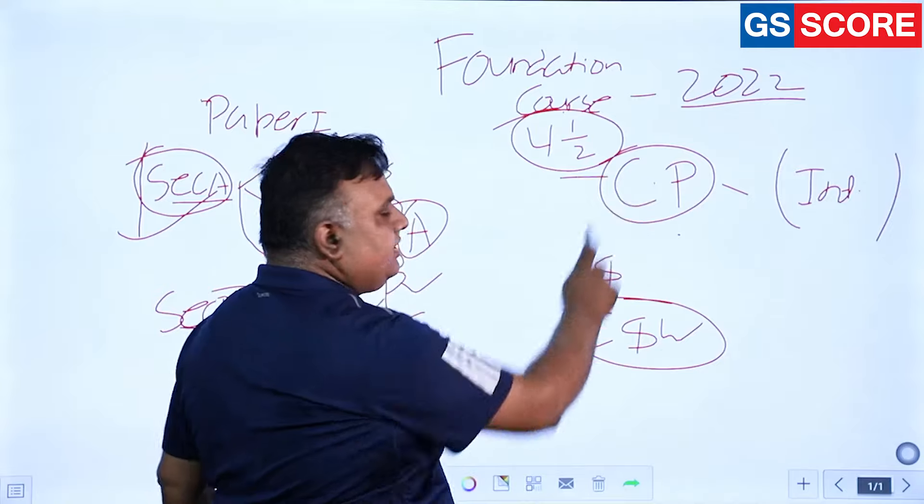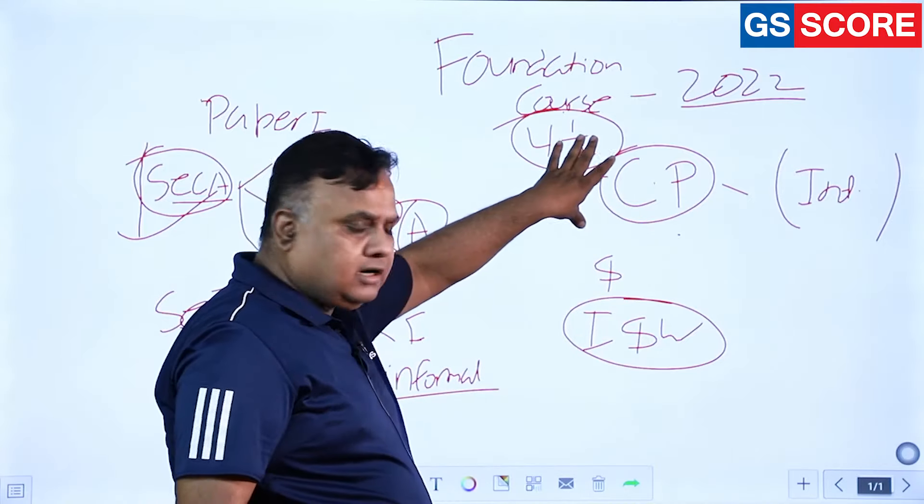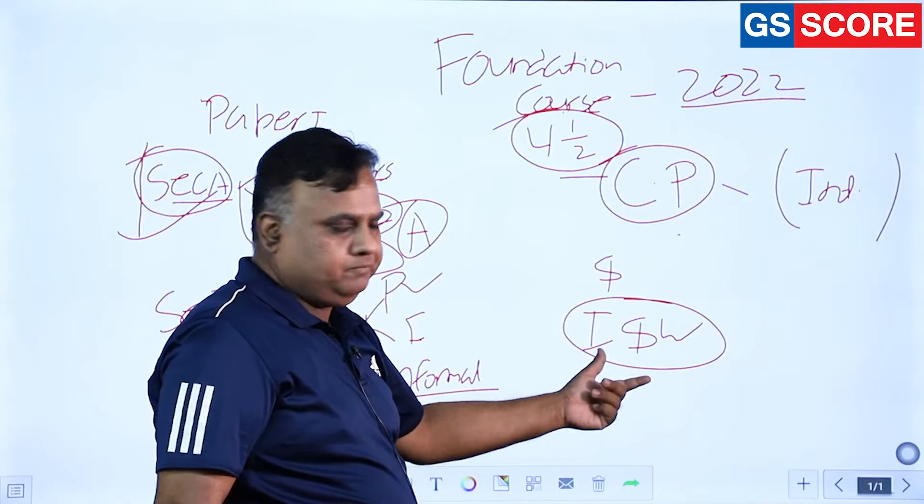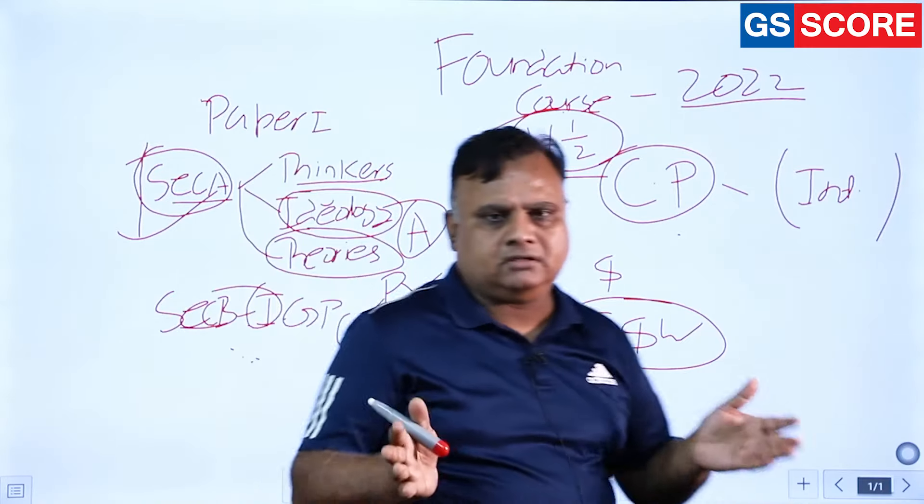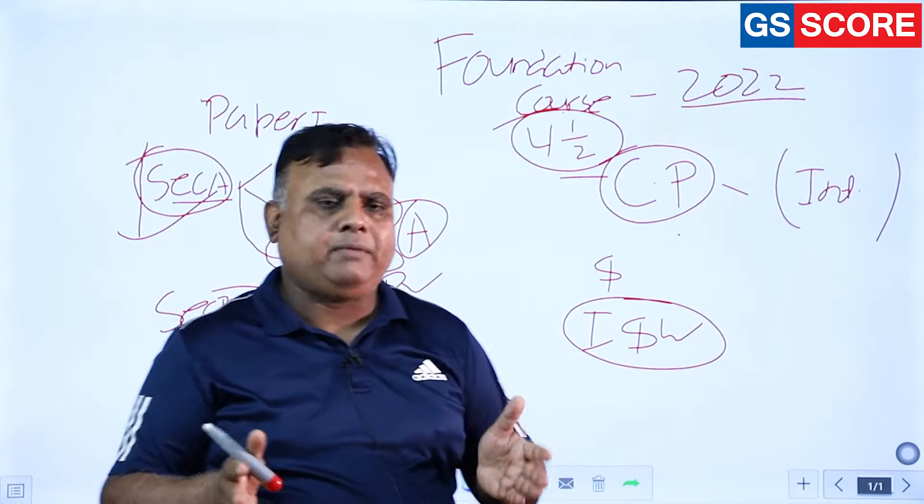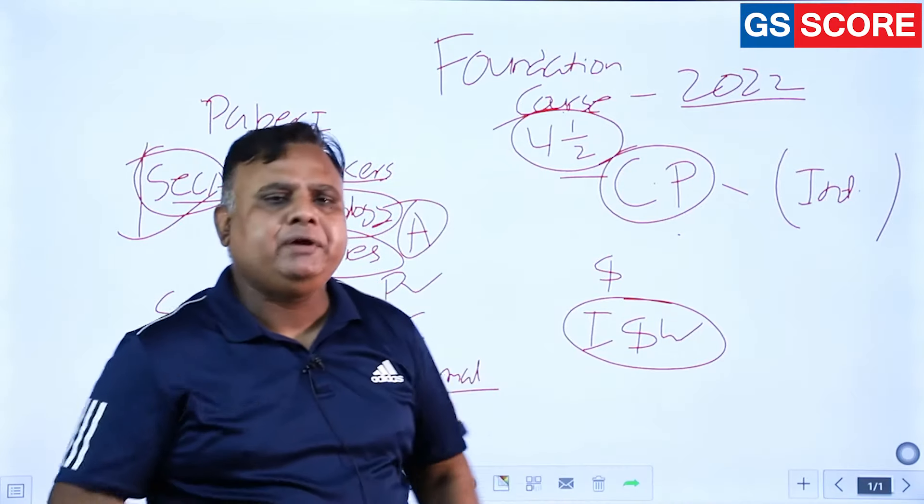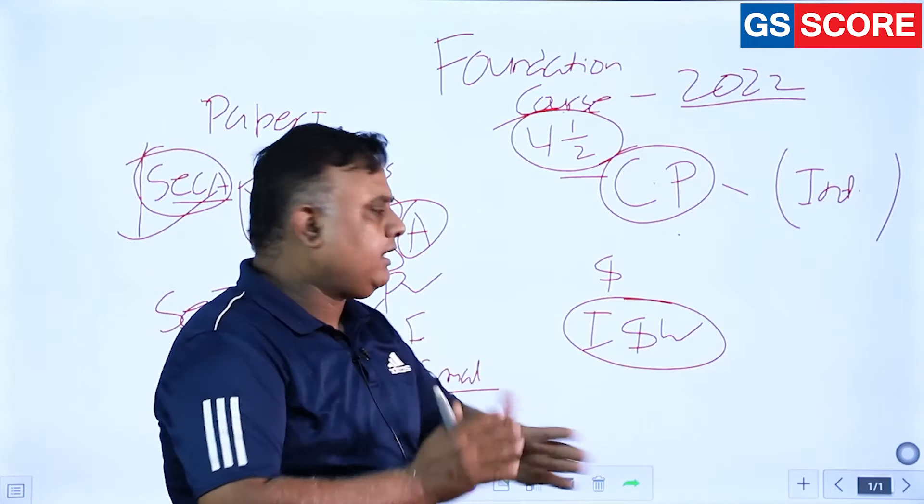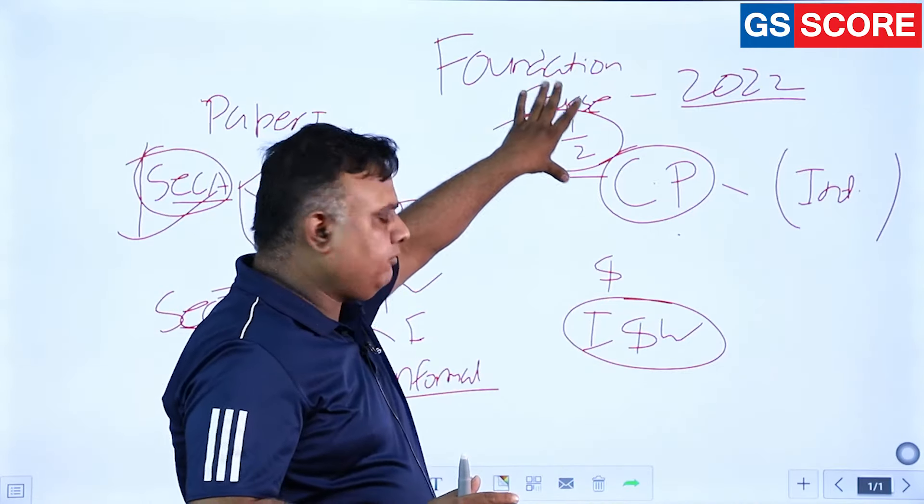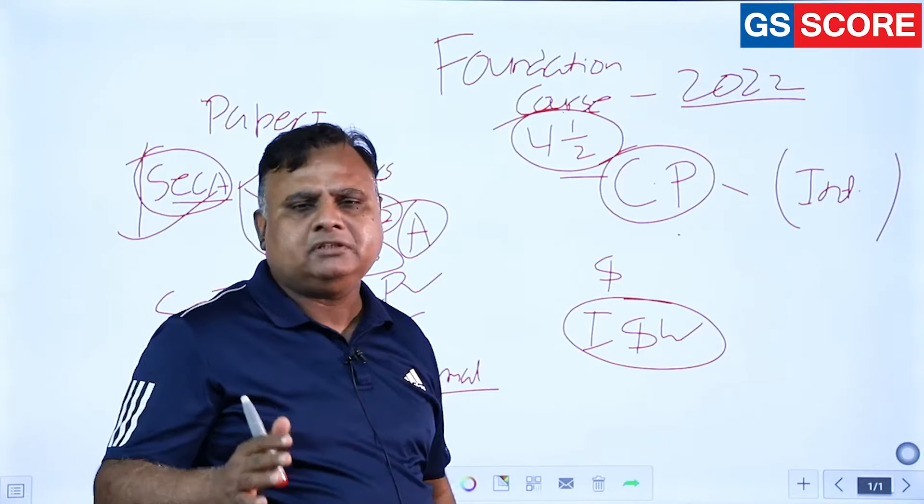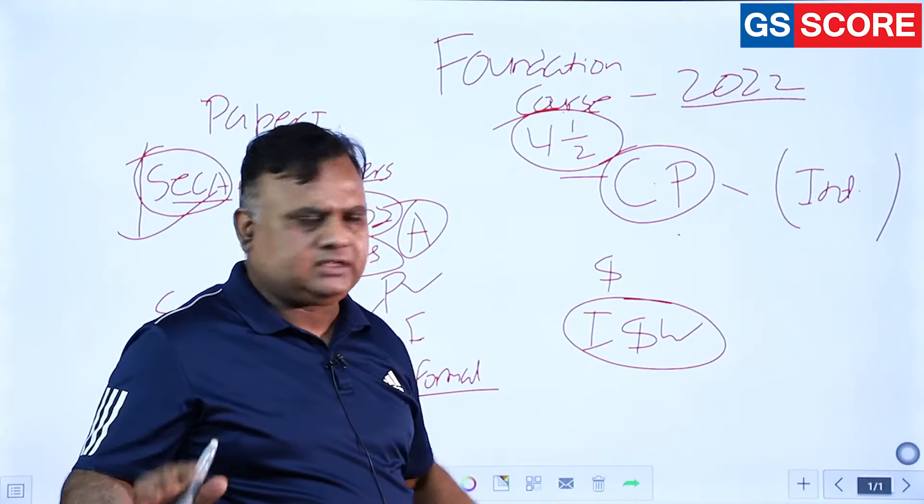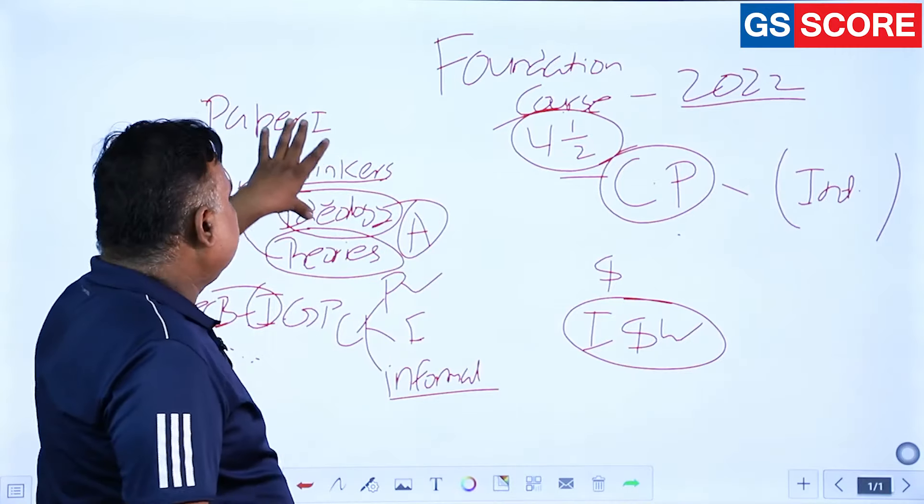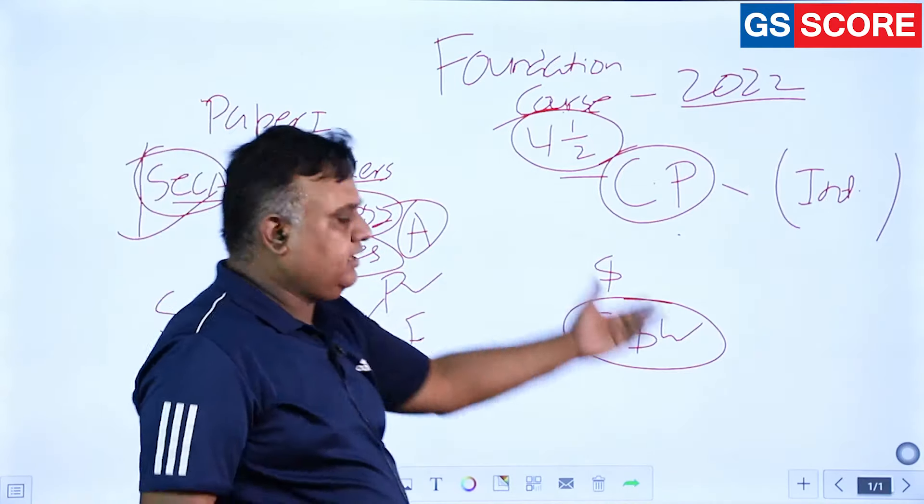Whenever we study here, we study in international context first, or global context first, and then apply and extrapolate for India. So total 40 topics, but in my opinion, so many topics have been repeated. So it's not 40, in fact it will be just not 50% but almost 30 topics are being covered. Although formality is 40, here there are 10 topics, here 11, here 11, here 8.